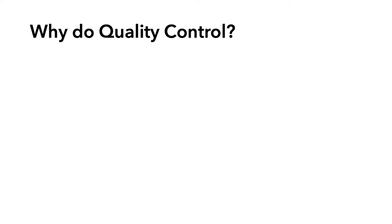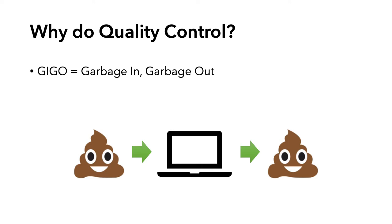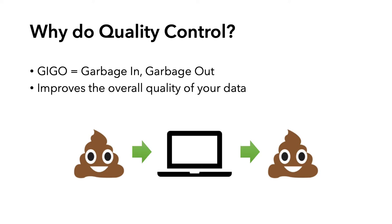First, why QC is important. You should do quality control essentially because GIGO — garbage in, garbage out. We do QC because the quality of the input sequences is fundamentally important to the confidence in the biological conclusions we draw from the experiment. The goal of QC is to improve the overall quality of your data.